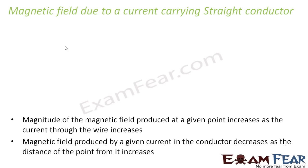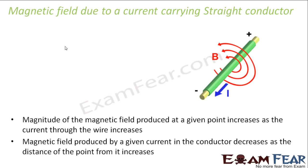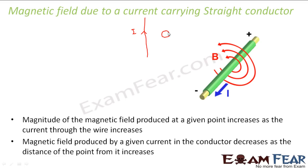Let us start with the magnetic field due to a current carrying straight conductor. When we talk about a straight conductor carrying current, it is a straight wire carrying current. In this case, the same kind of experiment was performed: there was a wire carrying some current I, and a magnetic compass needle was placed near this wire. It was found that it showed some deflection.